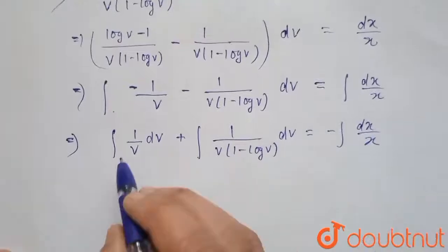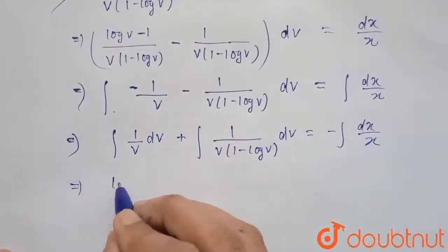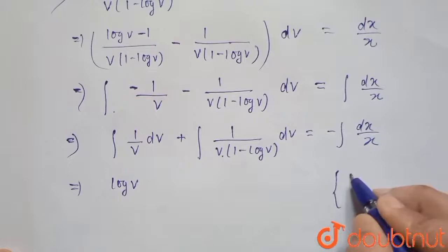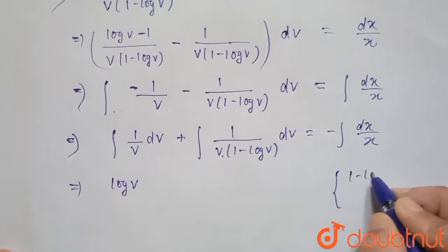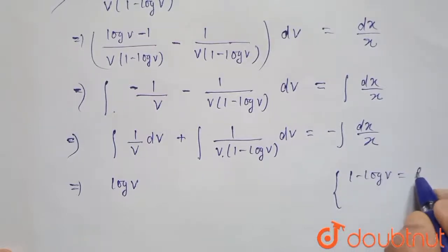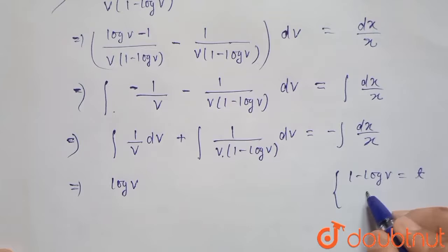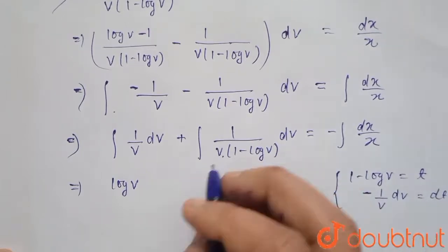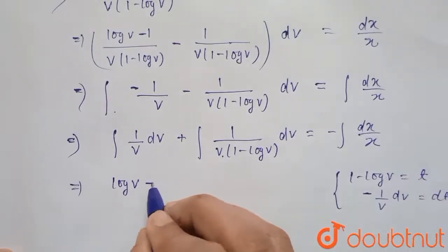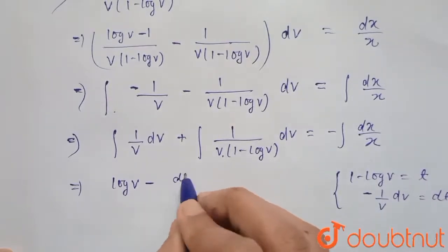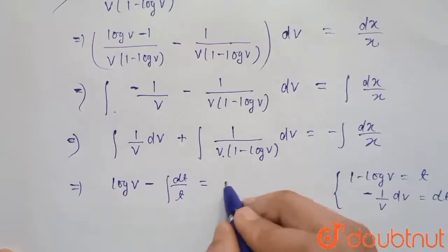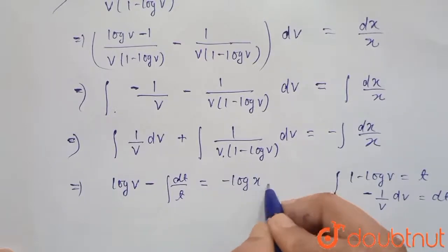Integration of 1/v gives log v. For the second integral, let t equals 1 minus log v, so differentiating gives minus 1/v dv equals dt. Substituting, the integral becomes minus integration of dt/t, giving minus log t. So we get log v minus log t equals minus log x plus c.